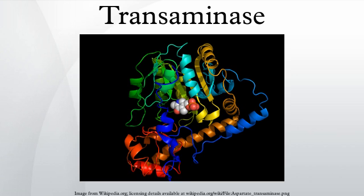Transaminases require the coenzyme pyridoxal phosphate, which is converted into pyridoxamine in the first phase of the reaction, when an amino acid is converted into a ketoacid. Enzyme-bound pyridoxamine in turn reacts with pyruvate, oxaloacetate, or alpha-ketoglutarate, giving alanine, aspartic acid, or glutamic acid, respectively.